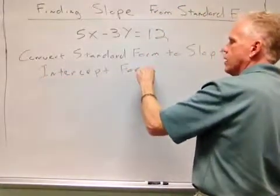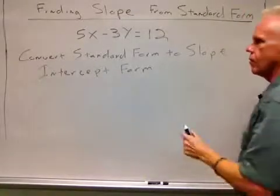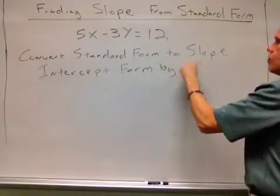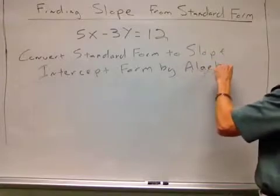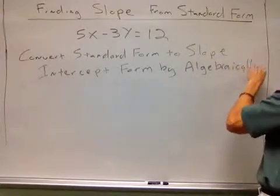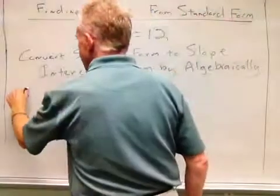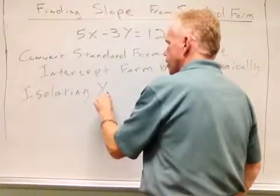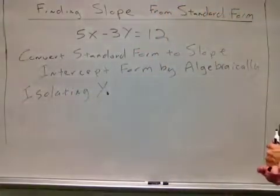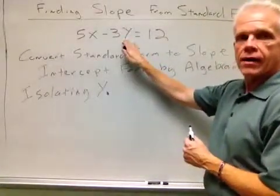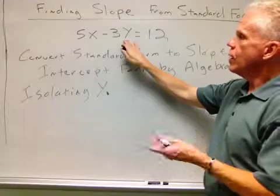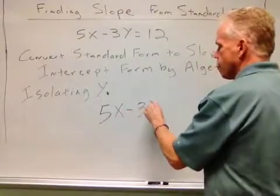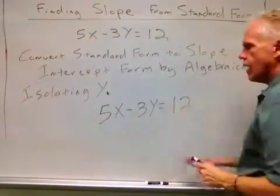We're going to convert this standard form to slope-intercept form by algebraically isolating y. So we want to isolate this y in this particular equation. Let's take a quick look at what we're going to do to make that happen.